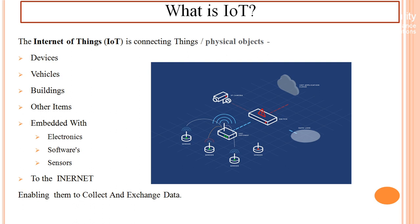We embed three things into the objects: electronics — like mobile phones or laptops — software installed in processors, or sensors for physical parameters like temperature, humidity, or pressure. Sensors convert those physical parameters into electrical signals, which are then communicated to the cloud. In any manner, we can connect everything to the internet.